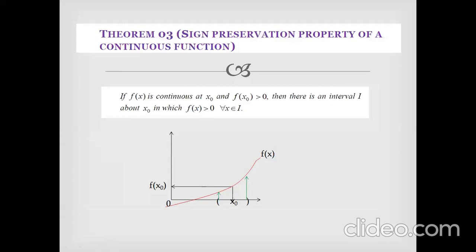Next theorem: the Sign Preservation Property of a continuous function. If f(x) is continuous at x₀ and f(x₀) > 0, then there is an interval I about x₀ in which f(x) > 0 for all x belonging to I.